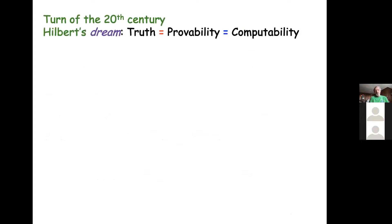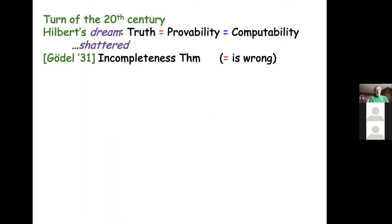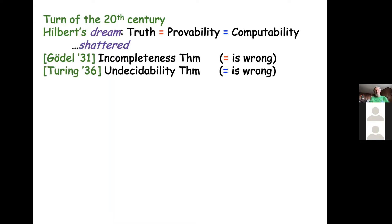Jumping ahead to the turn of the 20th century, you probably all know about Hilbert's dream. He believed that truth in mathematics is the same as provability, and that everything provable is automatically computable — that proofs can be found automatically. This dream was shattered, first by Gödel in his incompleteness theorem, and then by Turing, showing that the second equation is wrong. I want to talk about Turing's work — that's what's relevant here.